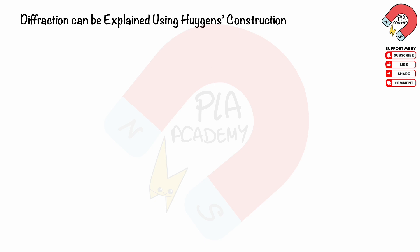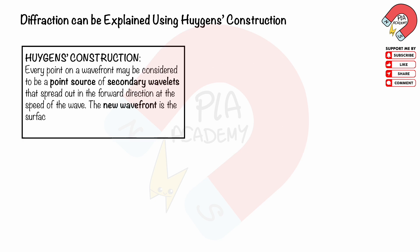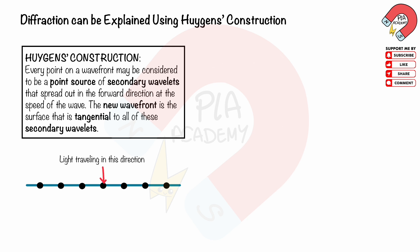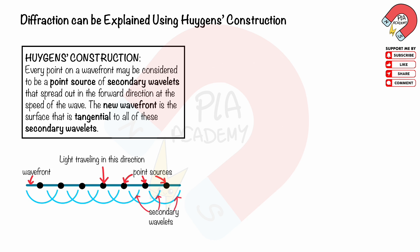Diffraction can be explained using Huygens' construction. Huygens' construction states that every point on a wave front may be considered to be a point source of secondary wavelets that spread out in the forward direction at the speed of the wave. The new wave front is the surface that is tangential to all of these secondary wavelets. Every point source on a wave front creates secondary wavelets, and every secondary wavelet contributes to the new wave front.